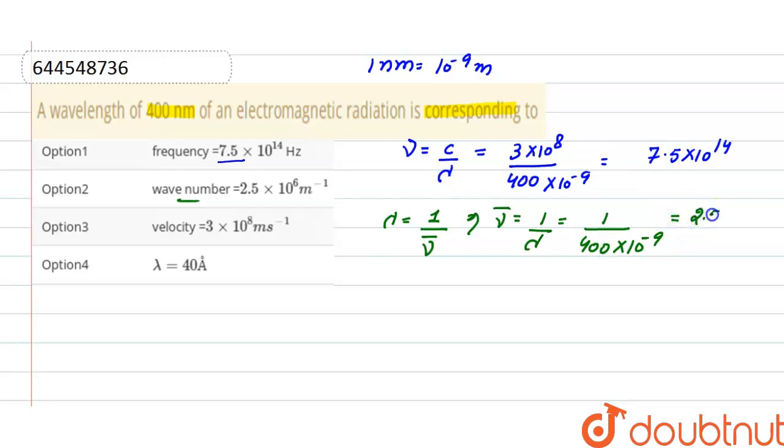That is 2.5 into 10 raised to the power 6 per meter. Next is velocity. As velocity is 3 into 10 raised to the power 8 meter per second, this is correct. Last is wavelength is 40 angstrom.